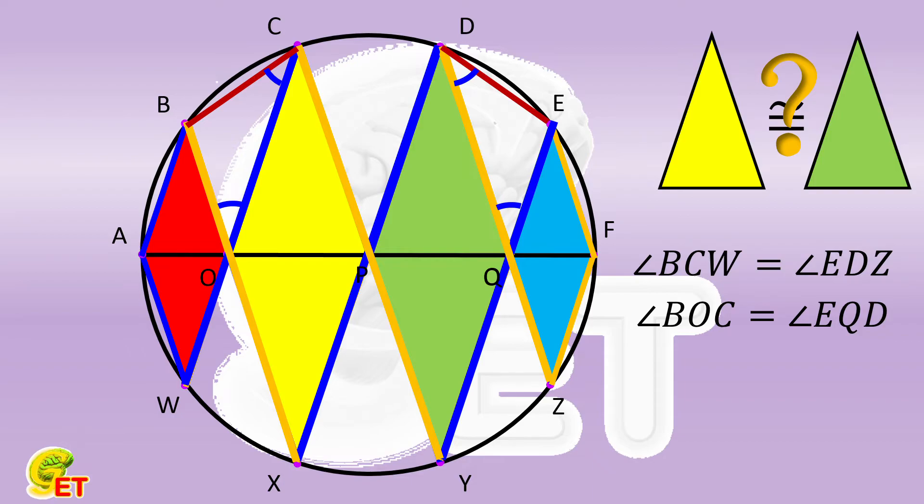So triangle BOC and triangle EQD are similar. Don't forget that BO and EQ are equal. So triangle BOC and triangle EQD are actually congruent.